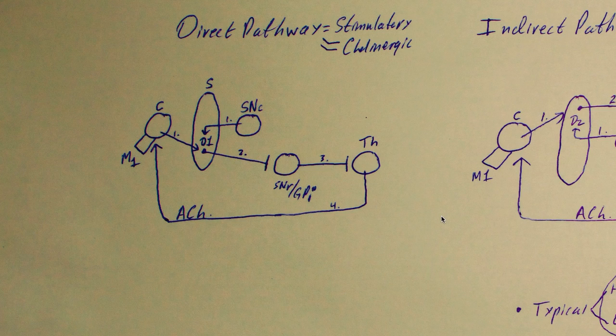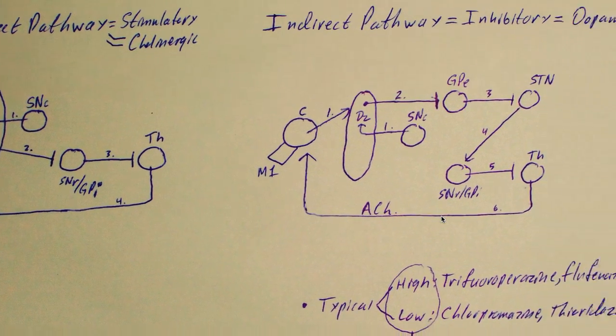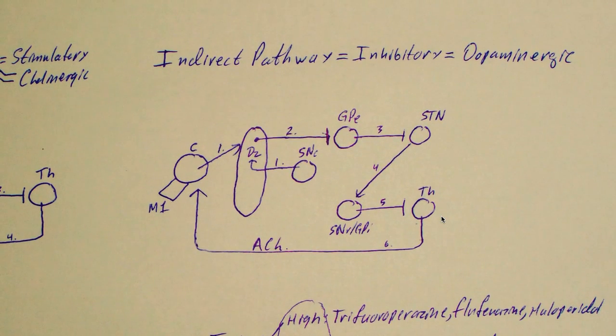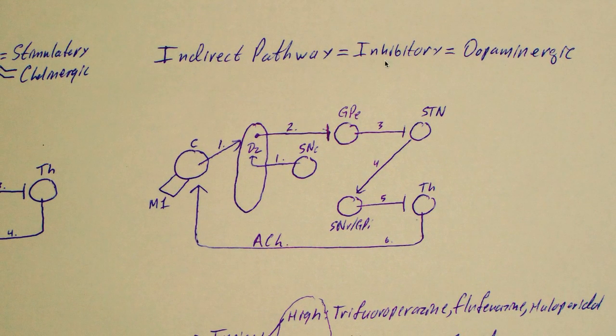Okay. Next we have the indirect pathway, the indirect inhibitory pathway, and it's dopaminergic. So straight off, it's inhibitory, meaning we're going to be inhibiting movements in this pathway. This pathway is a little confusing, so just keep that in mind.